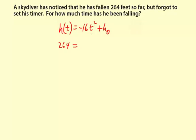And the input t, well, we don't know. And h 0, well, we don't know that either. So the question is, how do you solve this? All you know is that after so much time, he's fallen 264 feet.